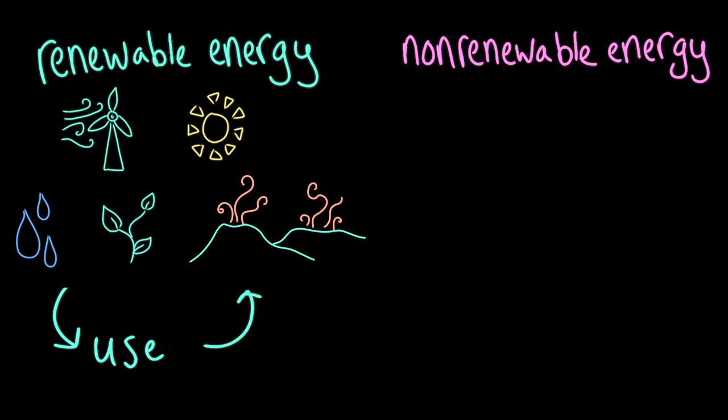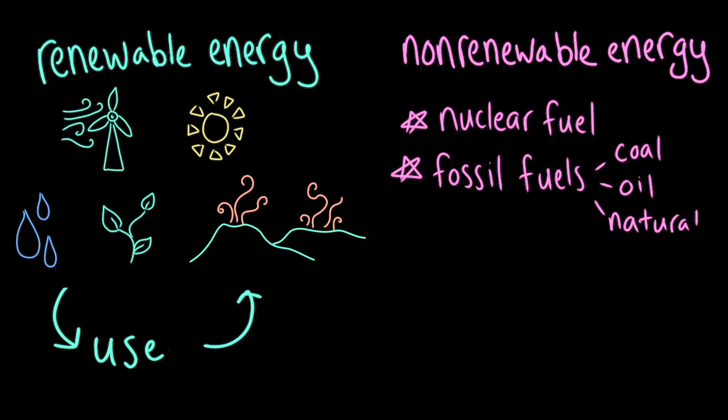Non-renewable energy sources, on the other hand, are sources that exist in a fixed amount and cannot be easily replaced. These energy sources must be extracted from the earth, and they include things like nuclear fuel and fossil fuels, which are things like coal, oil, and natural gas.